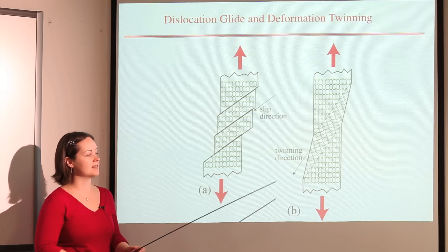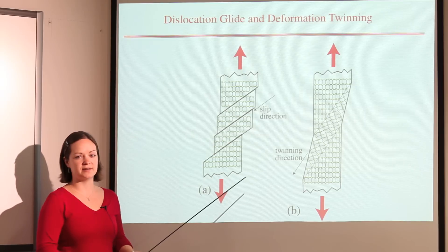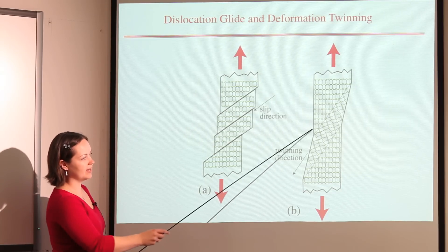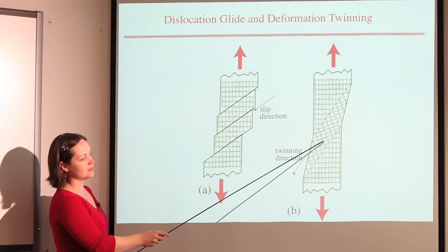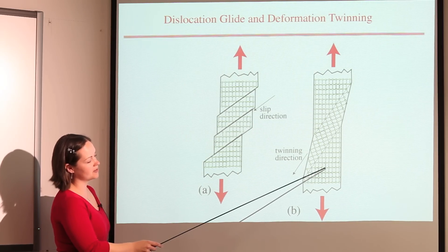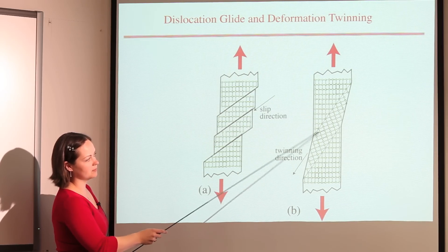The net effect is that we recreate the same crystal structure here in the middle but just in a different orientation. This is a twin, and it's got the same structure as the parent structure but reflected across the twin boundaries.